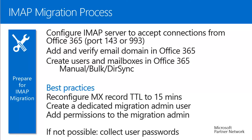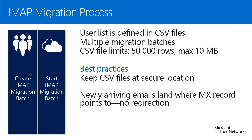As best practice, lower the TTL value of the MX record as before, and create a dedicated Migration Administrator user with permissions to log on to mailboxes. If this is not possible — for example if the IMAP server is hosted and you lack permission access — you can instead collect all user passwords and use them for the actual migration. Users are migrated in groups defined by CSV files, which contain the username, login name, and password.